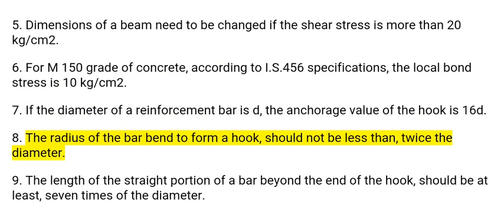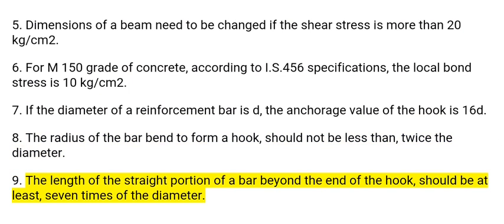8. The radius of the bar bent to form a hook should not be less than twice the diameter. 9. The length of the straight portion of a bar beyond the end of the hook should be at least 7 times the diameter.